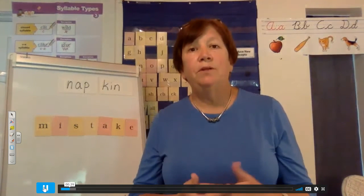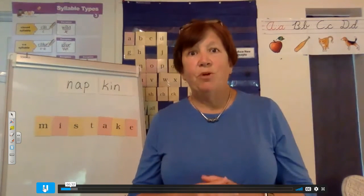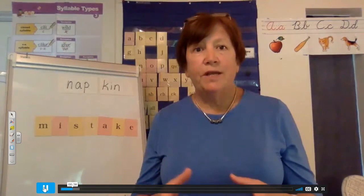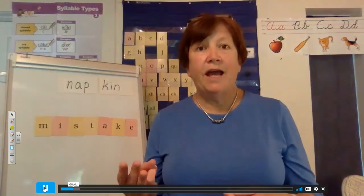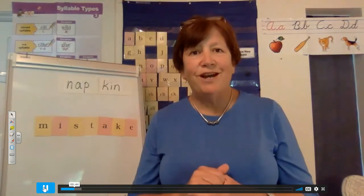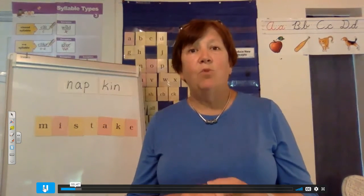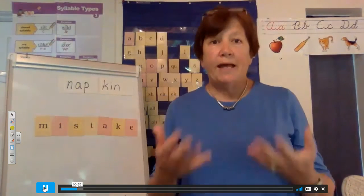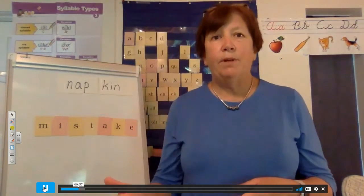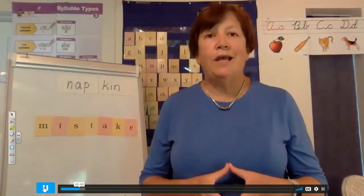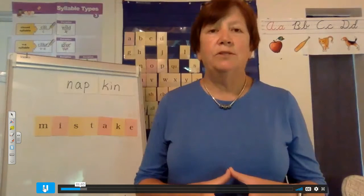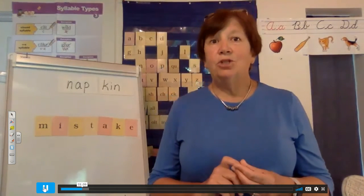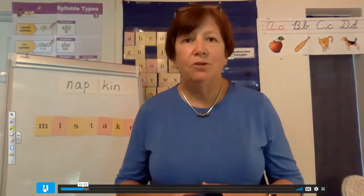Today, we're going to look at the rules about syllable division. Syllable division is very important because it helps us to break up bigger words. We know that words are made up of parts — little words like cat have three sounds. But we're going to be looking at bigger words with more than one syllable. Remember, a syllable is a push of breath. So the word catnip has two syllables, two pushes of breath. A lot of this should look familiar, but it'll remind you about reading those bigger words.